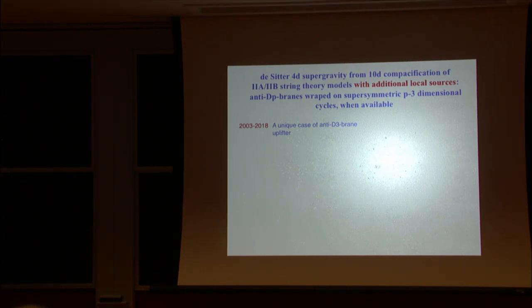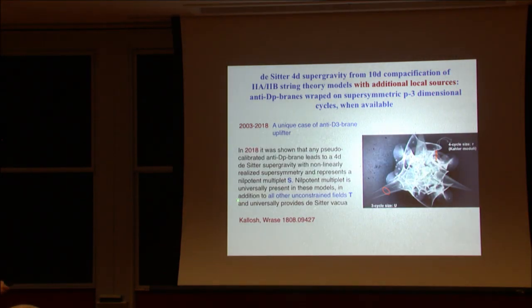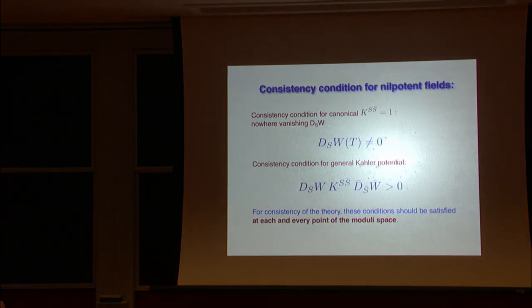Now there are some news about which Renata will tell you in her talk. And that is going beyond just KKLT and anti-D3 brane. So first we had this idea of anti-D3 brane. And then lately what was found that the role of this uplifter can be played by more complicated, by other type of fields, anti-DP branes, if they wrap in such a way that they will later effectively lead to the same effect as anti-D3 brane. This was in a very recent paper by them. And they have found some de Sitter states because of some additional contribution from the terms which appear there.